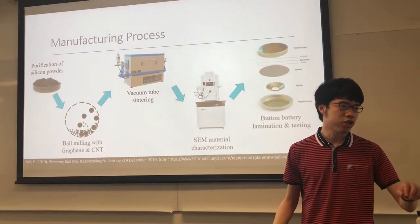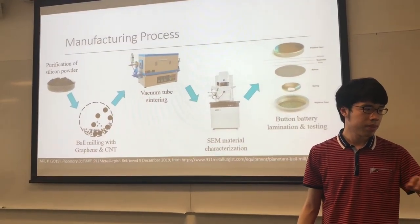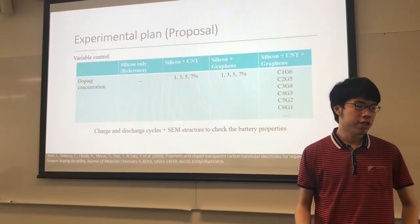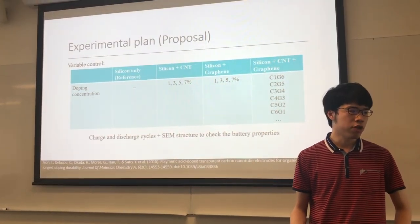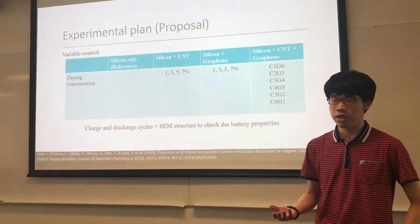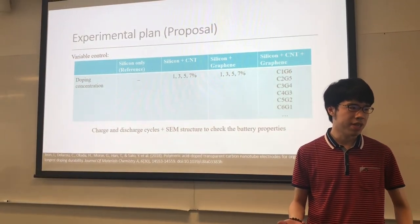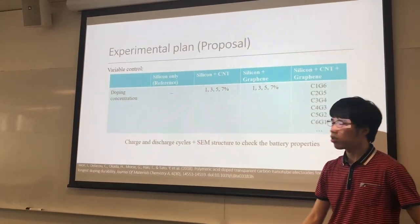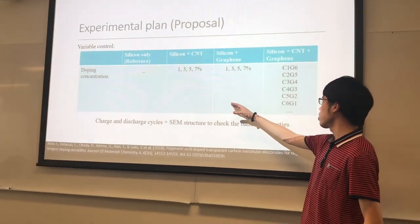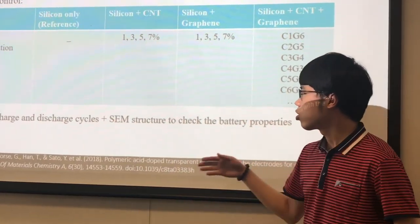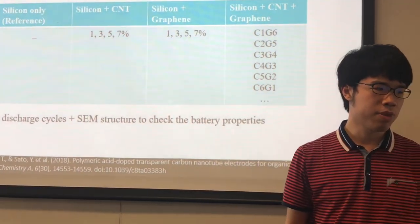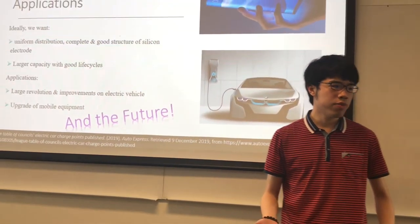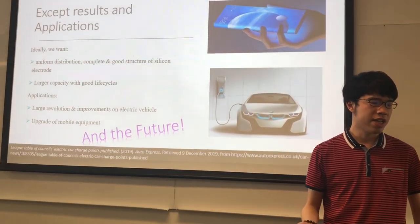According to the literature by Jun and Odaka in 2018, we recognized the threshold inside silicon electrodes is around 77%. Using a variable control method, a reference group was set up, and the doping concentrations follow these tables to find the most suitable concentration needed for this project.